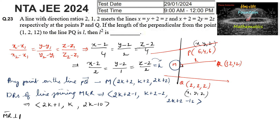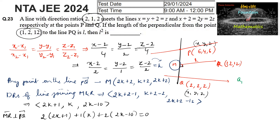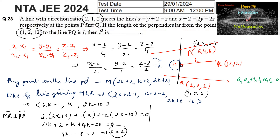Since MR is perpendicular to PQ, the dot product of their direction ratios equals zero. Direction ratios of PQ are 2, 1, 2. So: 2(2k+1) + 1(k) + 2(2k) = 0, giving 4k+2 + k + 4k = 0, so 9k - 18 = 0 — wait, 4k+2+k+4k-20 = 0 → 9k = 18, so k = 2.